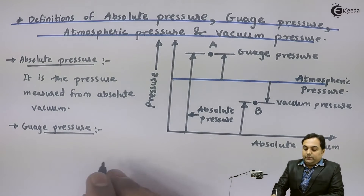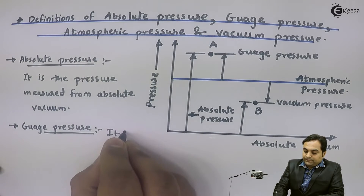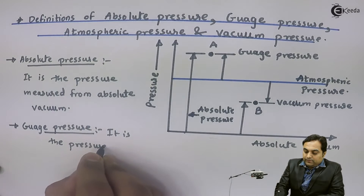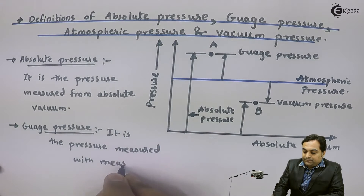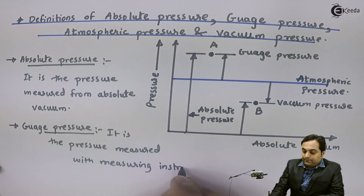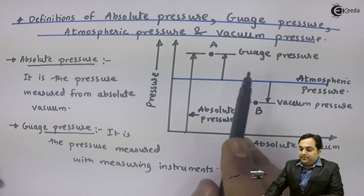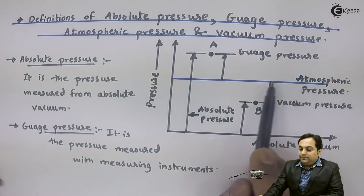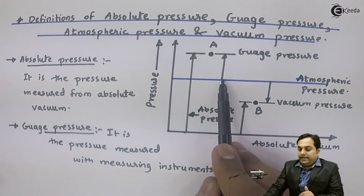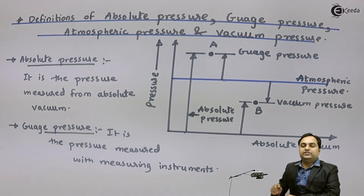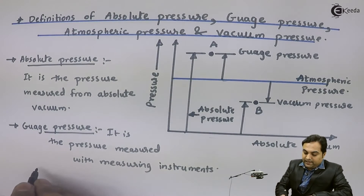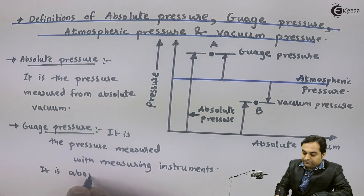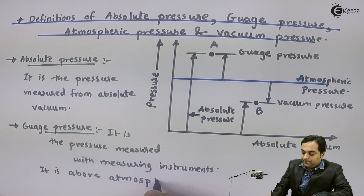Gauge pressure is the pressure which we measure with the help of measuring instruments. When we are measuring gauge pressure, our reference is the atmospheric pressure — it means we take atmospheric pressure as zero and start measuring from there. The measuring instruments used to measure gauge pressure start from a zero reading, and that zero reading indicates atmospheric pressure. So gauge pressure is the pressure measured above atmospheric pressure.